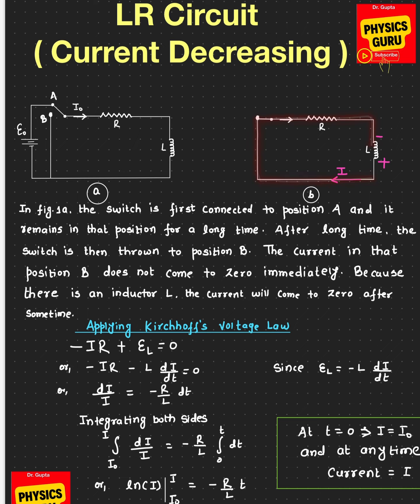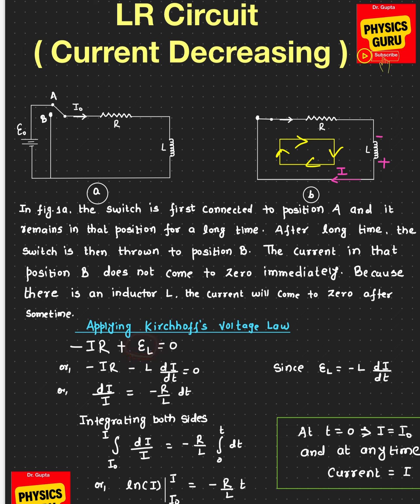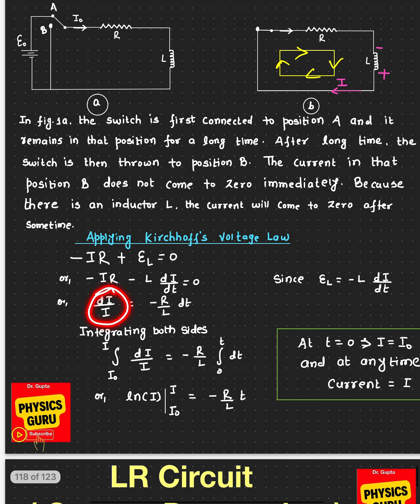We're going to apply Kirchhoff's law by making a loop in the clockwise direction. The current and the loop direction are parallel, so we take the voltage across the resistor as negative. The loop direction goes from negative to positive, so we consider this voltage as positive. Positive epsilon L equals zero. The induced EMF across the inductor is given by L di/dt. Plugging this in and separating like terms, we get current terms on one side and dt on the other.